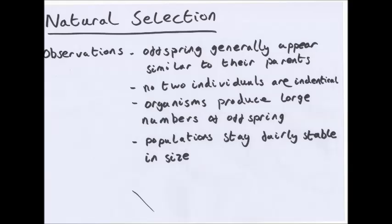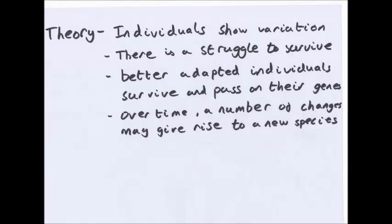So, natural selection. Charles Darwin and someone else called Alfred Russell Wallace came up with the theory of evolution. Sadly, Wallace isn't really talked about much in evolution because Charles Darwin got the fame for it. But you need to know about Charles Darwin. He went to the Galapagos Islands on the Beagle and saw many things. He made four main observations. Offspring generally appear similar to their parents. No two individuals are identical. Organisms produce large numbers of offspring. And populations stay fairly stable in size. And he came up with a theory.